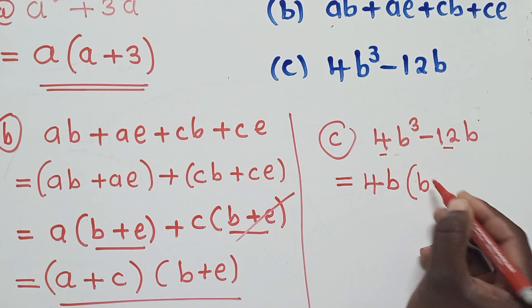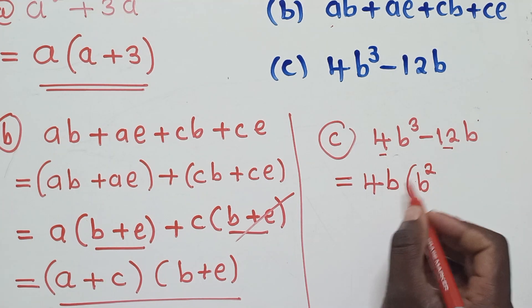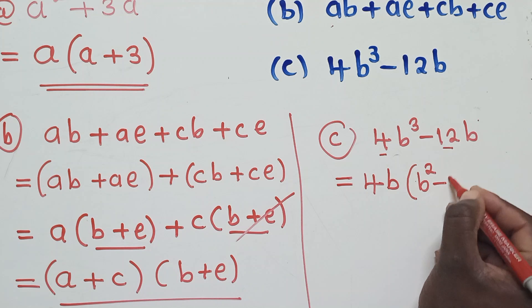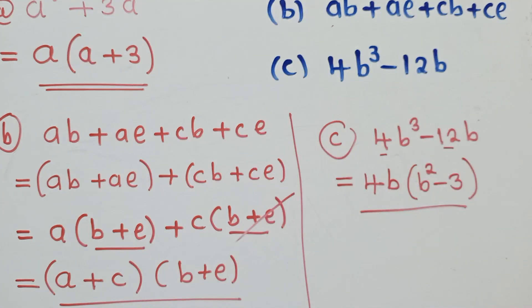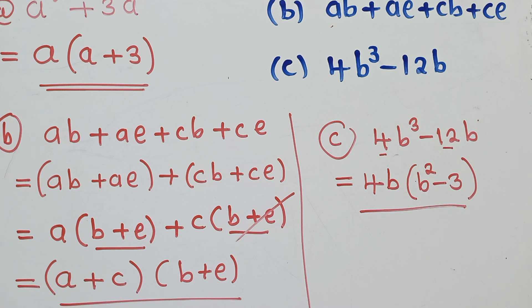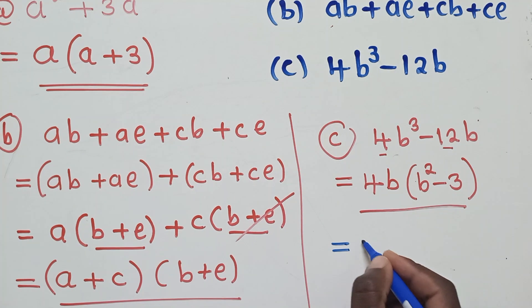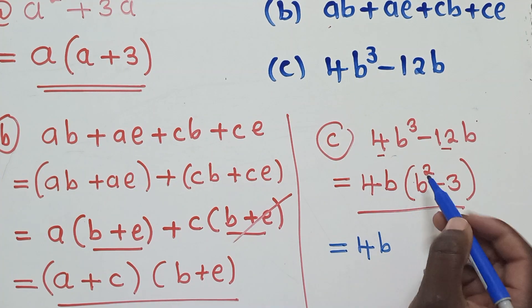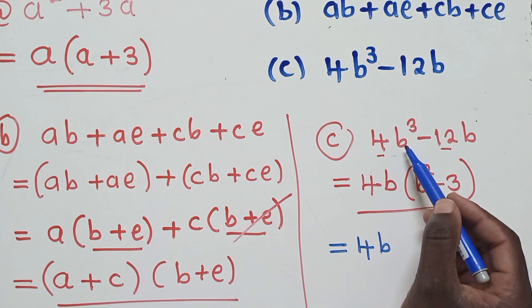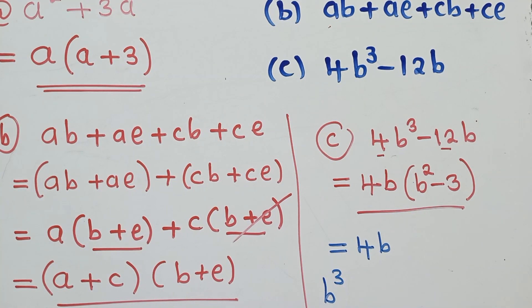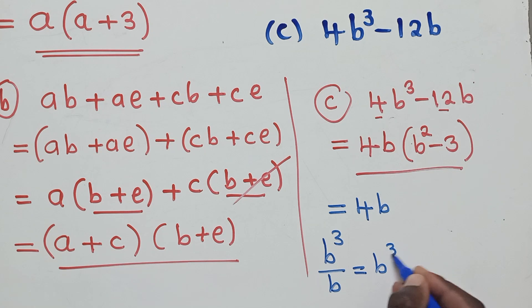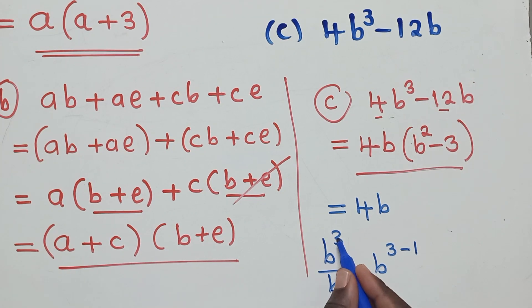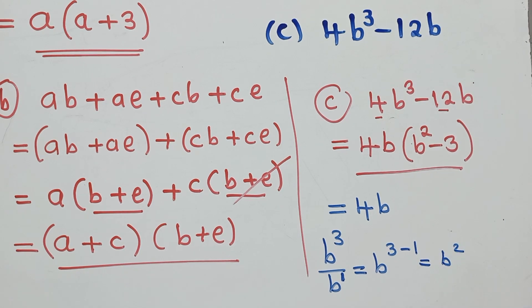So 4 into 12 is negative 3, and b into b is 1, giving us 4b(b² − 3). To explain further using laws of indices: b³ ÷ b¹ = b^(3−1) = b². That is how we get b² inside the bracket.